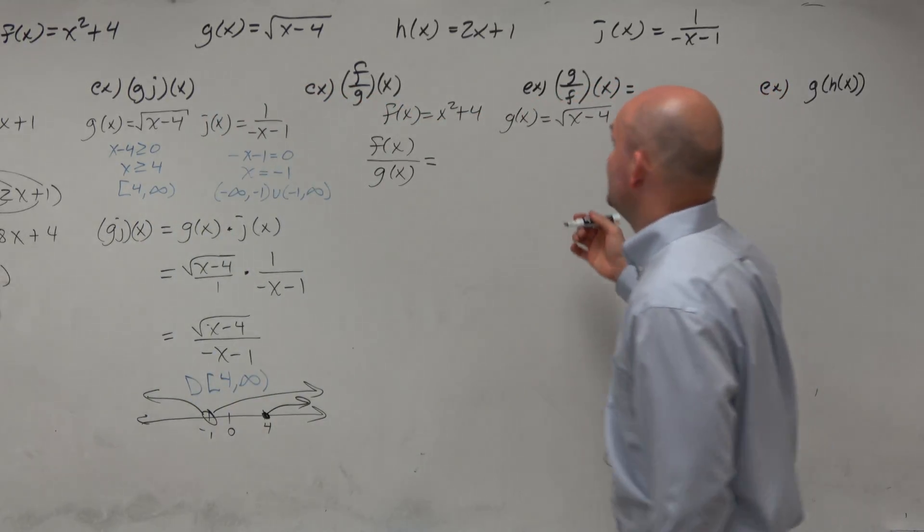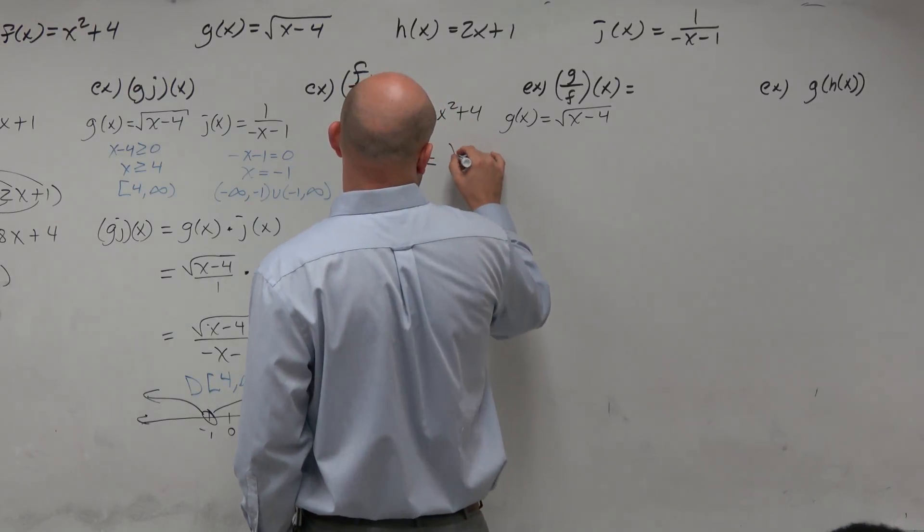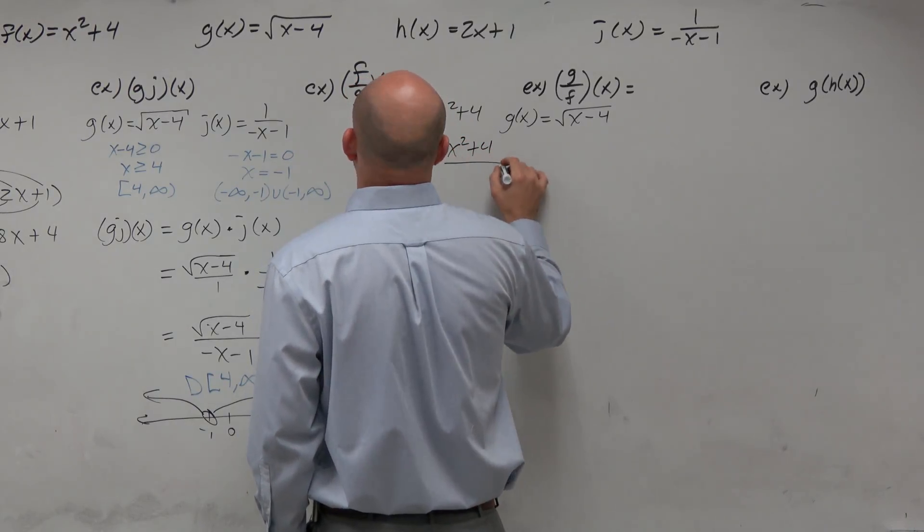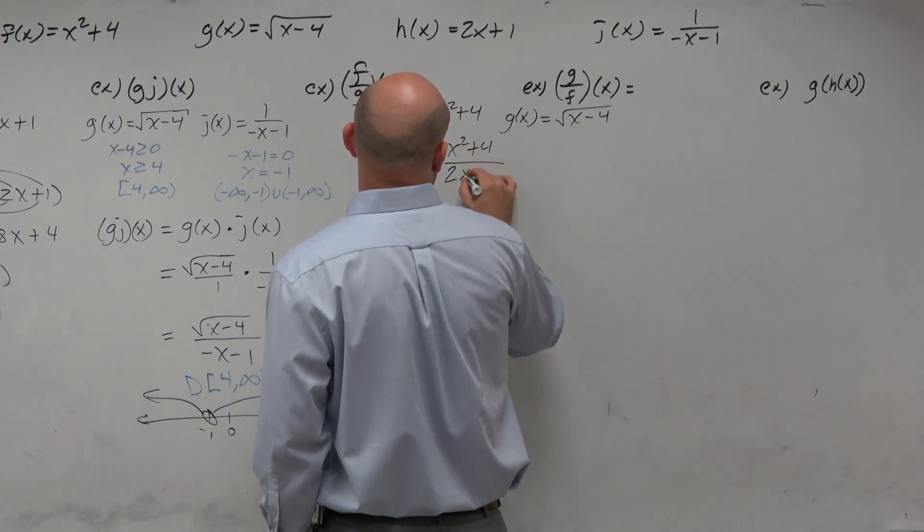So all we're simply going to do is take the top function f of x, which is x squared plus 4, and divide it by 2x plus 1.